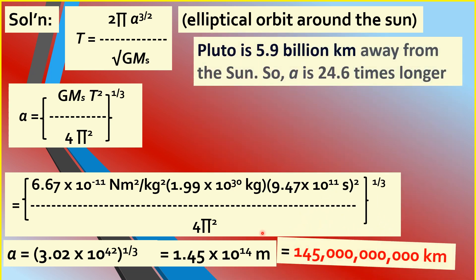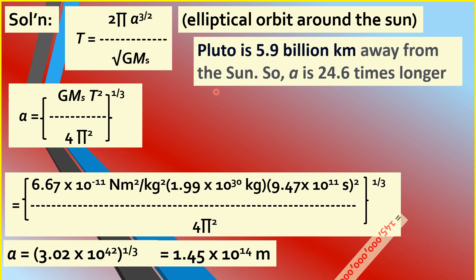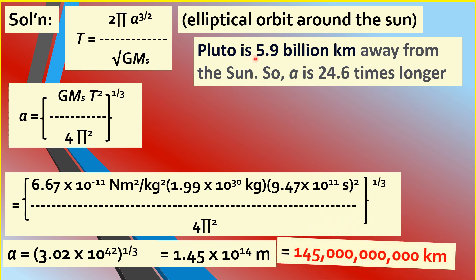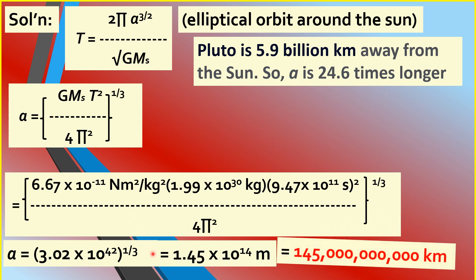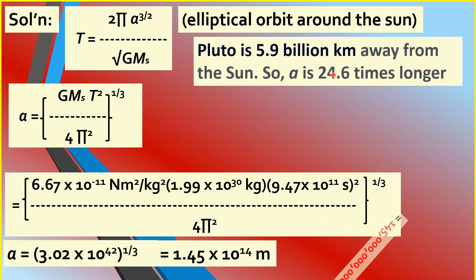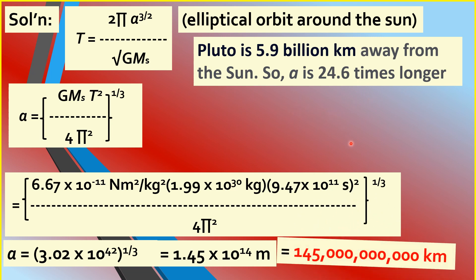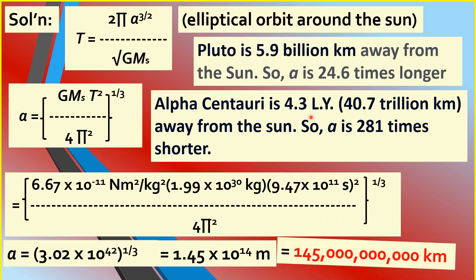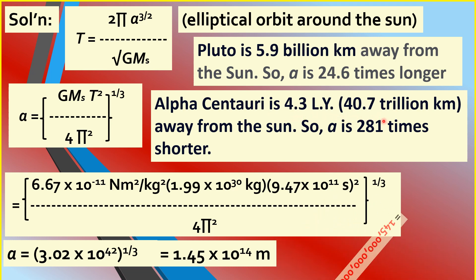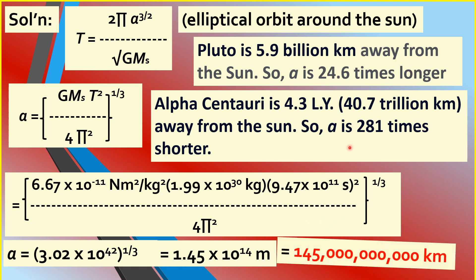When compared to the average Sun-Pluto distance of 5.9 billion kilometers, our calculated semi-major axis A is 24.6 times longer. When compared to the distance from the Sun to Alpha Centauri, the nearest star, which is 4.3 light-years or 40.7 trillion kilometers away, A is 281 times shorter.